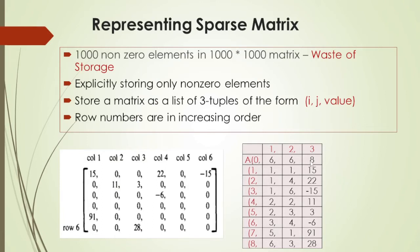If there are many non-zero elements, there are many list entries, and row numbers are in increasing order. In the first row of the 3-tuple list, we store: number of rows, number of columns, and number of non-zero elements — that is 6 rows, 6 columns. For example, 1,1 has value 15; 1,4 has value 22. If we use 6×6 = 36 memory locations normally, with this representation we use only 9×3 = 27 memory locations.